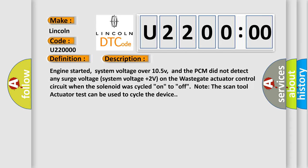Engine started, system voltage over 10.5V, and the PCM did not detect any surge voltage system. Voltage plus two volts on the wastegate actuator control circuit when the solenoid was cycled on to off. Note the scan tool actuator test can be used to cycle the device.